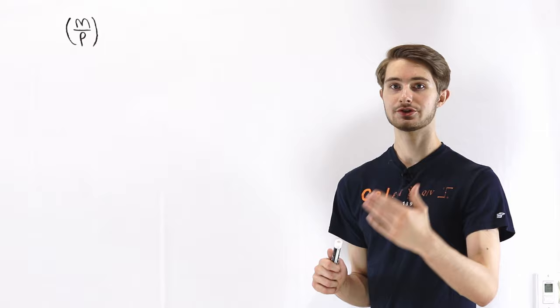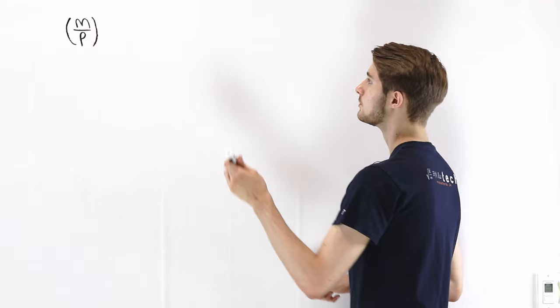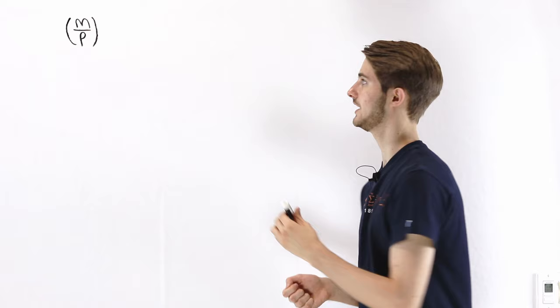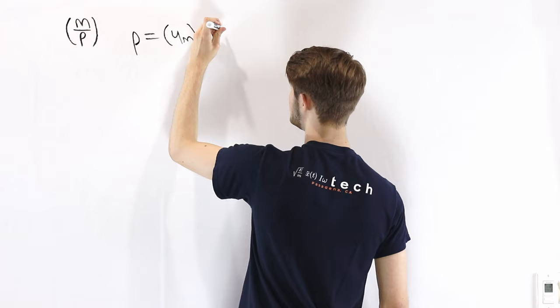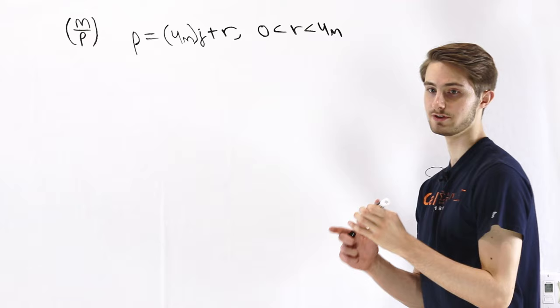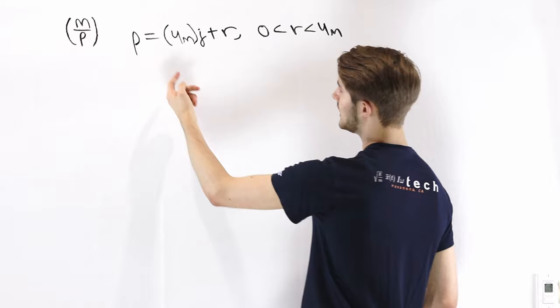Suppose we want to determine whether some number m is a quadratic residue mod p. We're going to start by writing p in a very specific form based on m using the division algorithm. So we can write p equal to some multiple of 4m — say 4mj — plus a remainder r, where r is between 0 and 4m. Because p is prime, it cannot be any multiple of 4m, so r is not equal to 0.